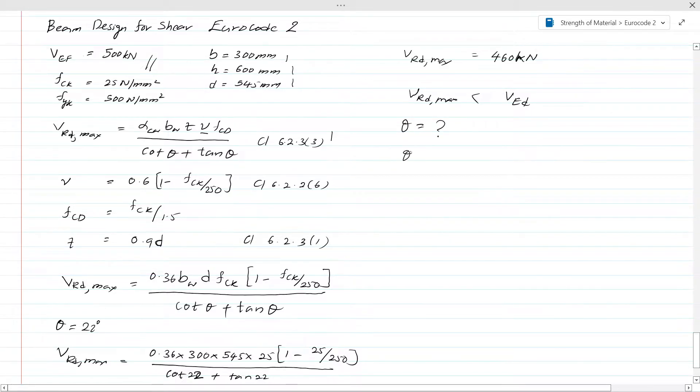There are equations given from different derivations, so you can use this equation: θ equals 0.5 × sin inverse of [VEd / (0.18 × b_w × d × f_ck × (1 - f_ck/250))]. This angle should be less than 45 degrees, that is a must.